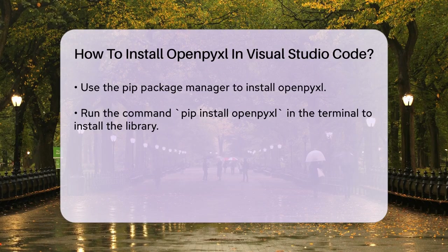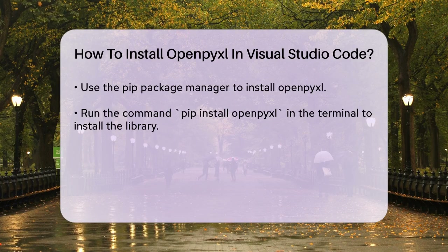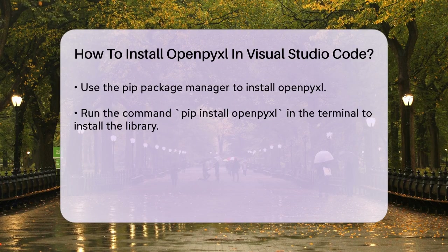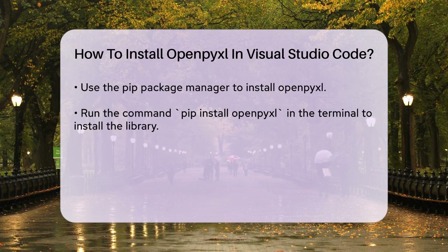After activating your environment, you can install OpenPixel using pip. Simply run the following command in the terminal: pip install openpixel. This command will download and install the OpenPixel library and its dependencies.